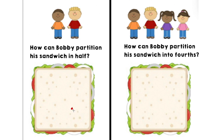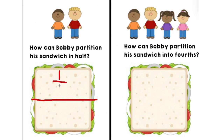Is there another way that Bobby could partition his sandwich in half? That's right, Bobby could partition his sandwich in half horizontally, which means from side to side. As I am cutting the sandwich horizontally, I want you to get your finger and follow me. We need to start in the middle if we're cutting the sandwich in half horizontally. Now as you see, the sandwich is cut in half because I see two equal parts. Bobby would receive one out of the two parts, and then his friend would receive one out of the two parts, so now each has one half of the sandwich.